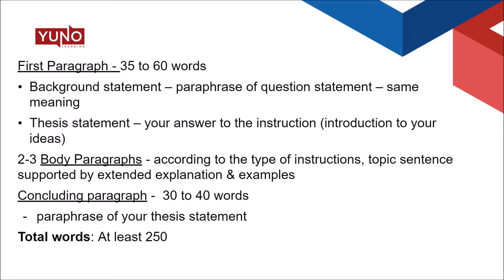If the instruction is 'discuss both and give your opinion' and you give a one-sided opinion, you'll still have two body paragraphs. But if you give a balanced opinion, you'll have three body paragraphs. Similarly, for the advantage-disadvantage essay, if the instruction is 'what are the advantages and disadvantages?', one body paragraph covers advantages and another covers disadvantages. But if the instruction is 'do you think the advantages outweigh the disadvantages?', the side with more points gets two paragraphs and the other gets one — so you'll have three body paragraphs.